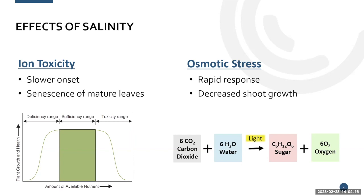A more commonly seen effect is osmotic stress. This is just a fancy way of saying that the plant can't get enough water, or it's drought stressed. The equation for photosynthesis requires carbon dioxide and water to make sugars and perform the functions needed to grow as a plant. If we don't have enough water, we can't make those sugars, which means we can't grow.